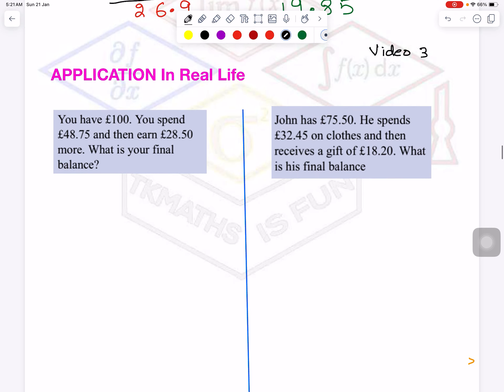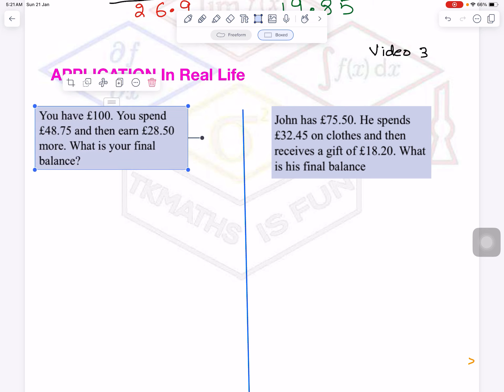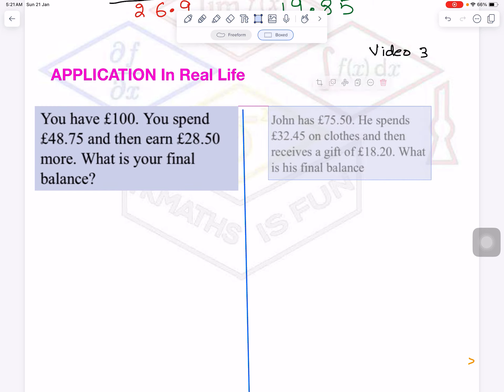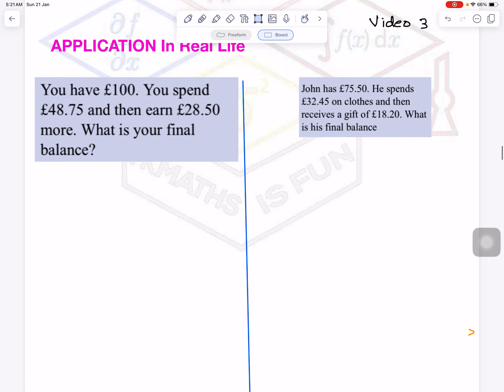So let's start with two questions. First of all, I am solving this one. First question, and this is number 2. And there will be tests for you. So you have £100. You spend £48.75. Remember, read it as 48.75, do not read it as 75. And then earn £28.50. What is your final balance?